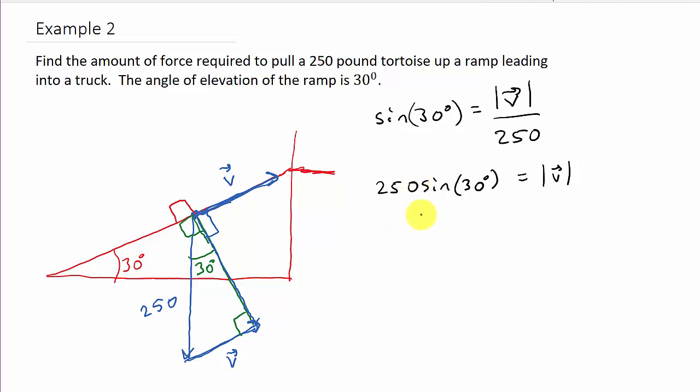And we don't even really need a calculator to do it because we know the sine of 30 is a half. And one half times 250. So the magnitude of V is 125 pounds.